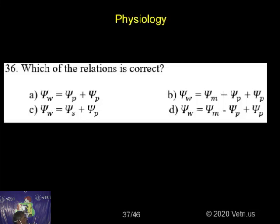And see, phi w is equal to phi s plus phi p. And phi w is equal to phi m minus phi p plus phi p. So among these, only one is the correct and the remaining three are wrong.